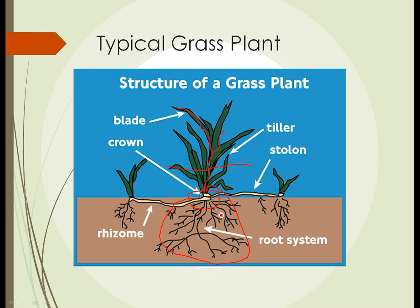Grass plants can reproduce both sexually and asexually. Asexually, or vegetatively, they have two methods of reproduction which are very similar. In one, they send out a rhizome, which is a specialized stem that grows beneath the surface of the soil, and a new grass plant is developed at the end of the rhizome. The second method is to send out a similar structure called a stolon, but the stolon grows on the surface of the soil, and a new grass plant will grow on the end of that.